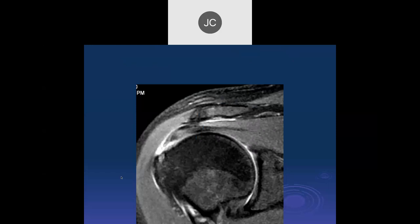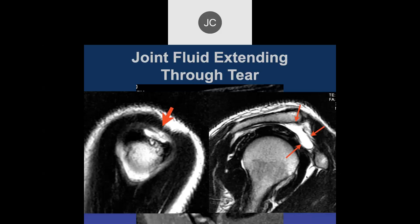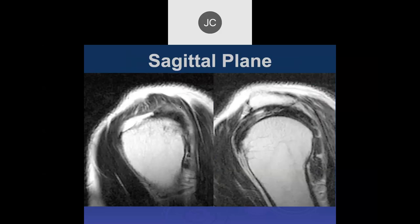On the coronal view it looks like there's an almost full-thickness supraspinatus tear at the footplate. On sagittals, it still looks full thickness. There's fluid in the subacromial/subdeltoid bursa tracking inferiorly through a full-thickness tear. We also have proximal retraction of the musculotendinous junction and a very degenerated tear with severe degenerative disease of the residual supraspinatus tendon. On sagittal images, there's a very large tear covering almost the entire supraspinatus footplate, with likely overlap tearing of the anterior infraspinatus fibers.